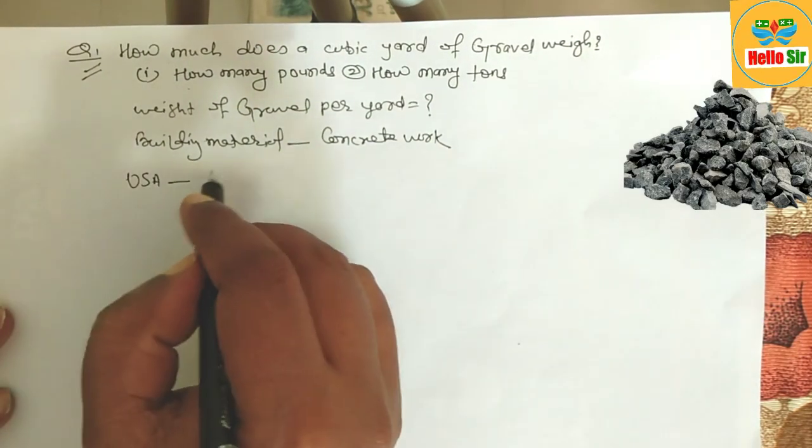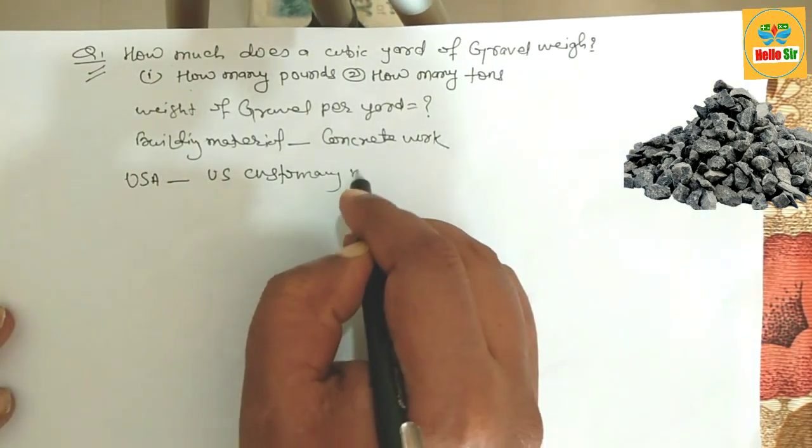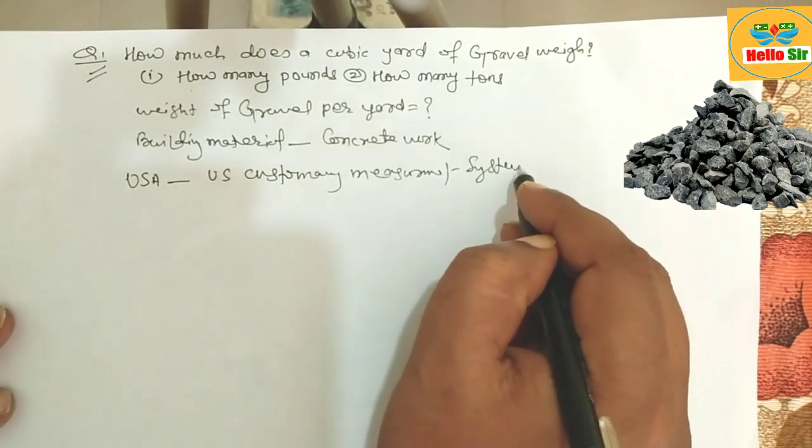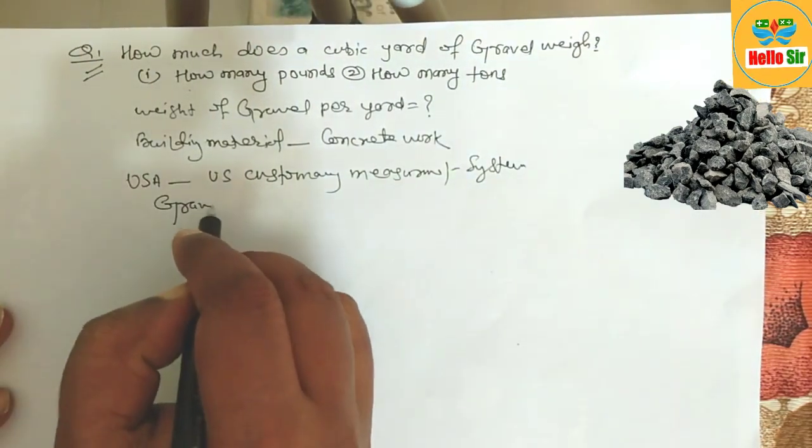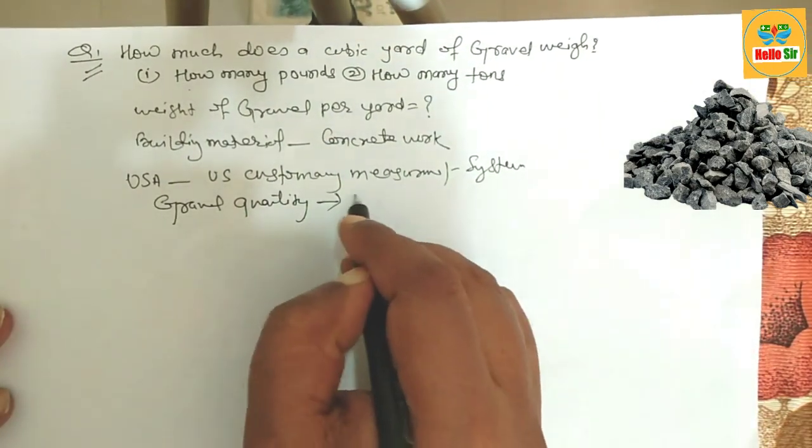In the United States, according to the US customary measurement system, gravel quantity is measured in cubic yards.